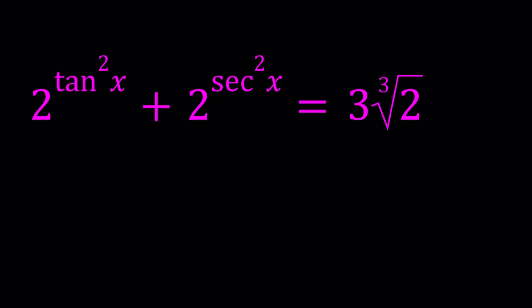Hello everyone, in this video we're going to be solving an exponential trigonometric equation. Now we have 2 to the power tangent squared x plus 2 to the power secant squared x equals 3 times the cube root of 2. Such a weird number, such an irrational number, but we're going to solve this equation.